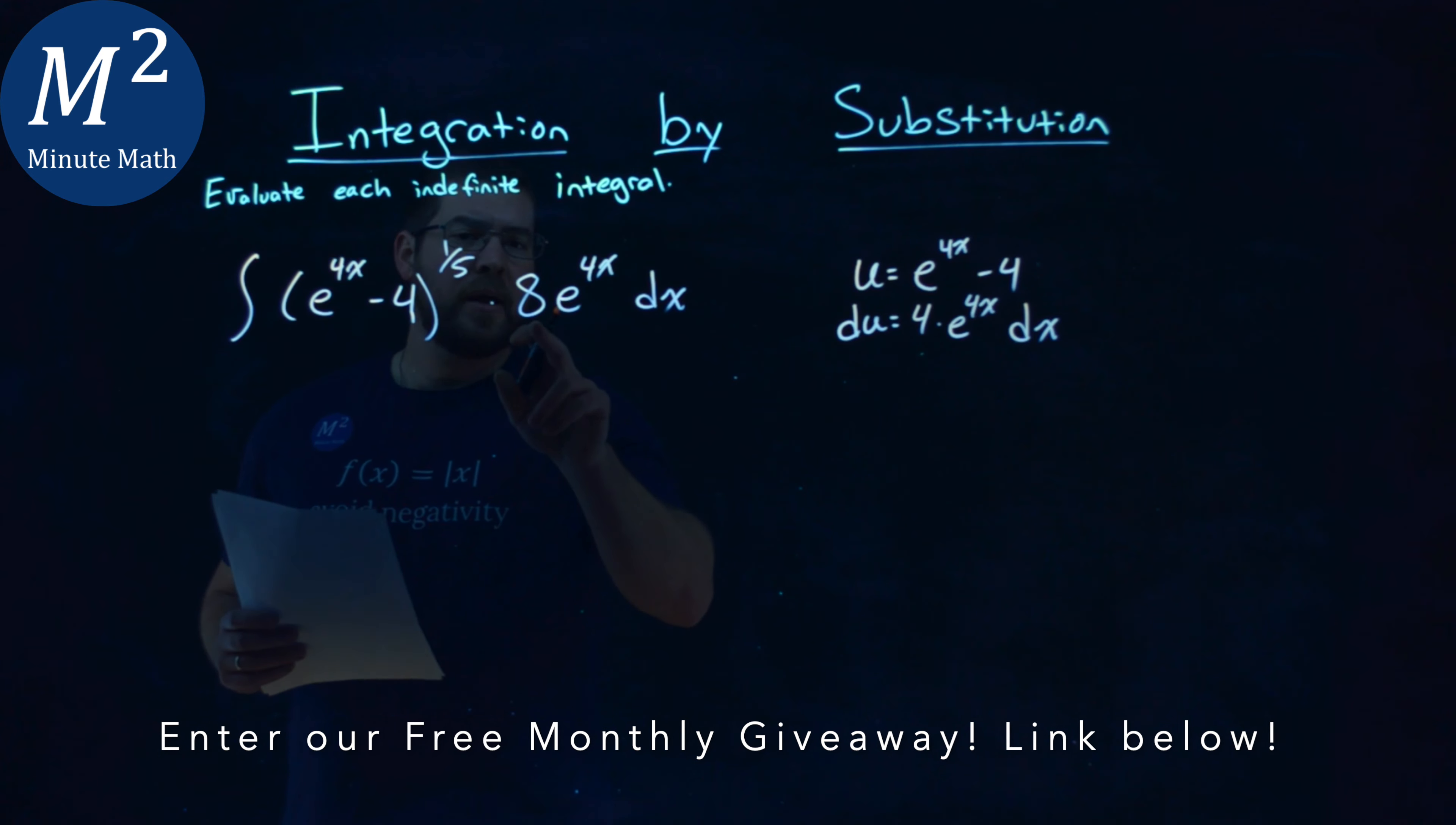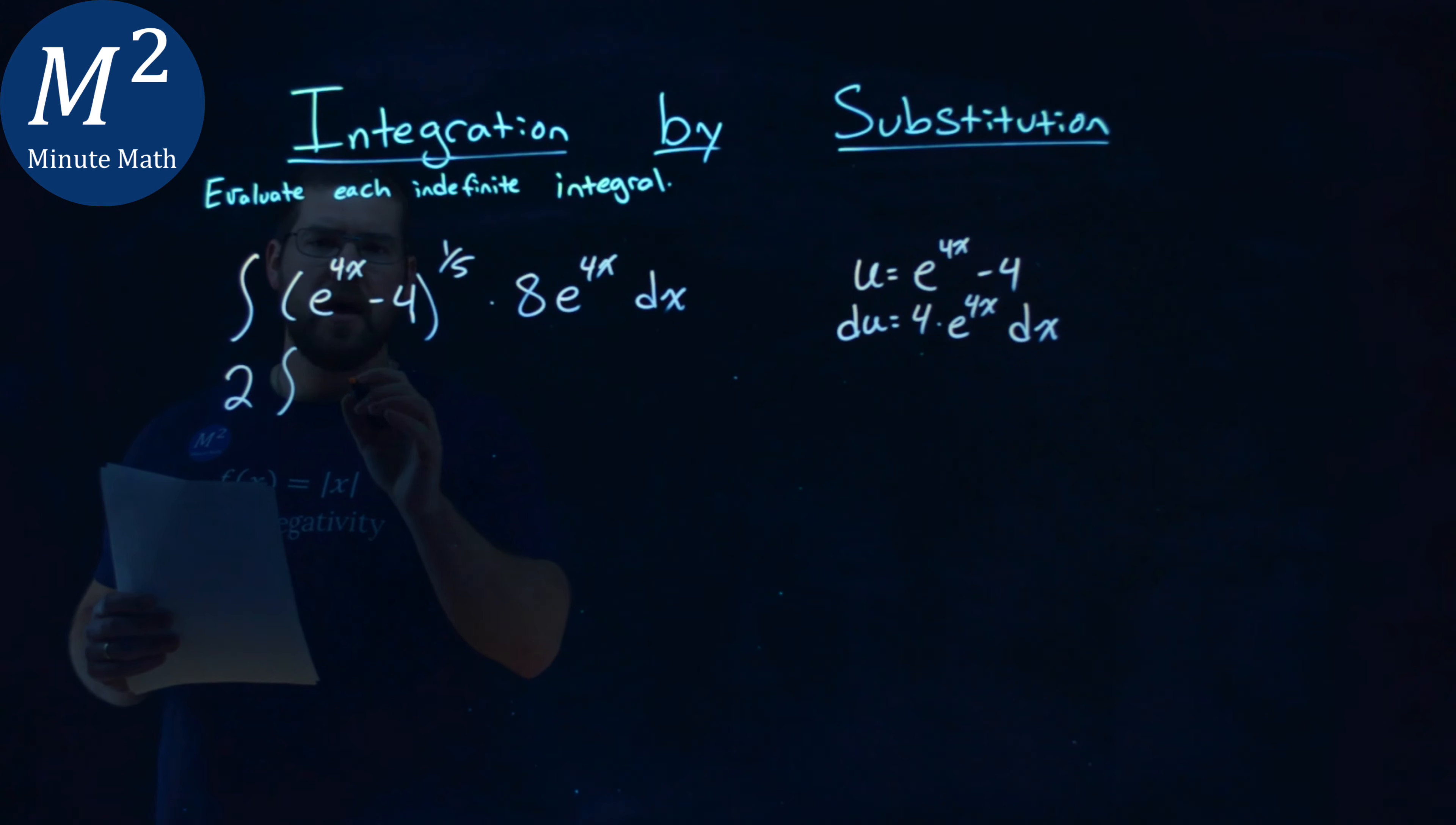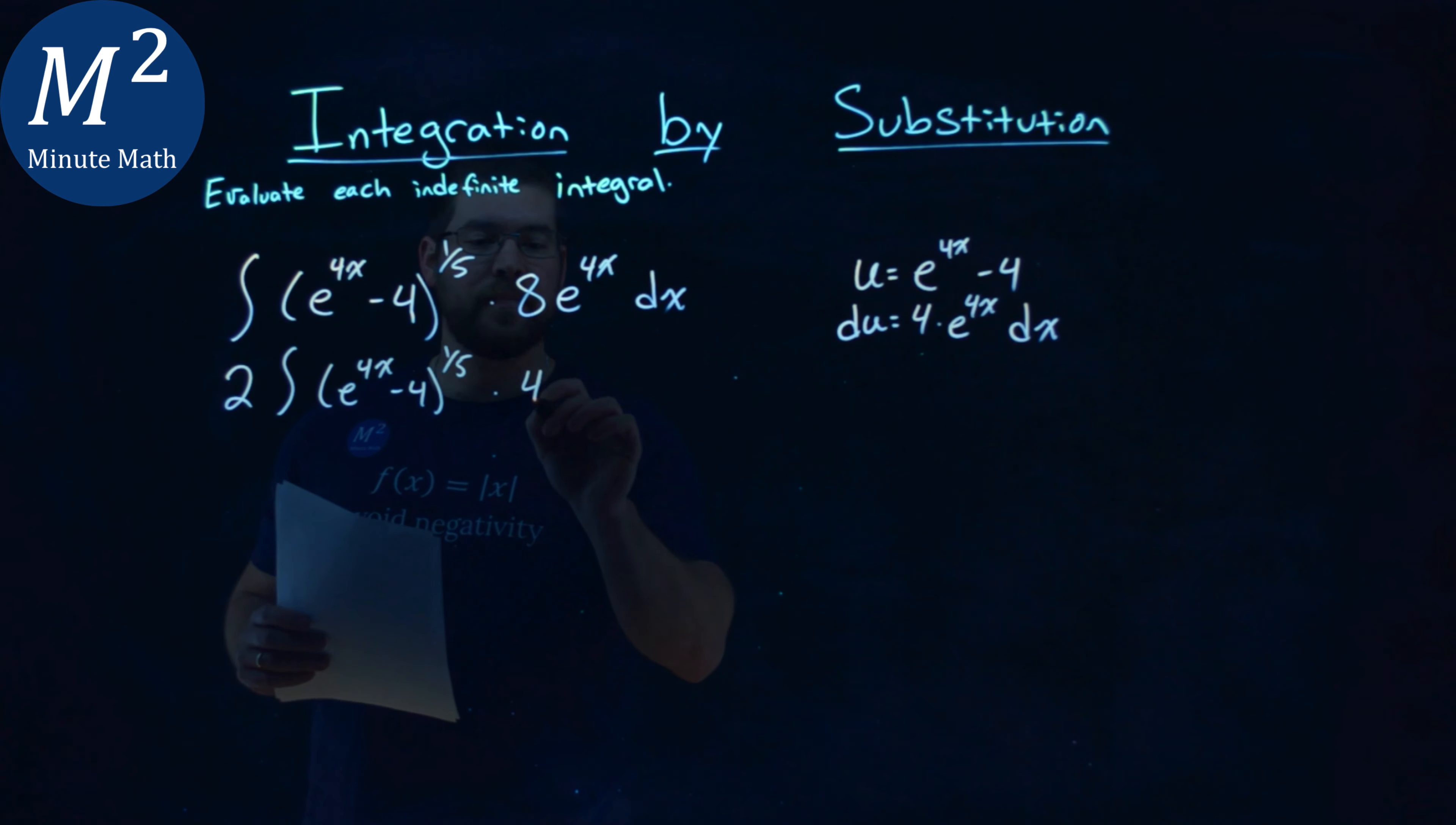If I pull out a 2 from the 8 and put it on the outside of the integral, which we can because it's a constant, we have then e to the 4x minus 4 here still to the 1/5th power times 8 divided by 2 is that 4, e to the 4x dx.